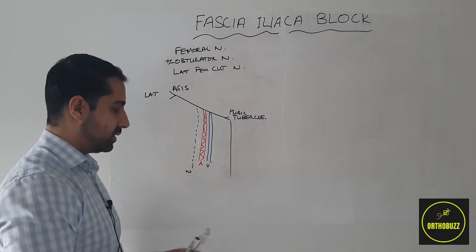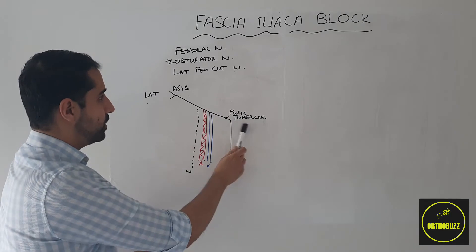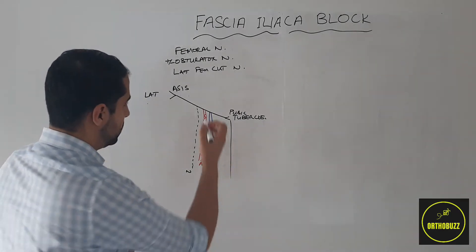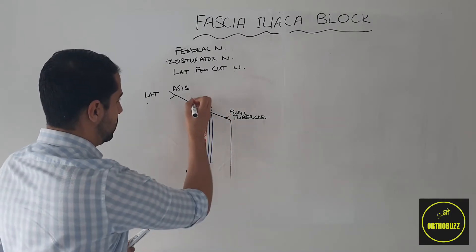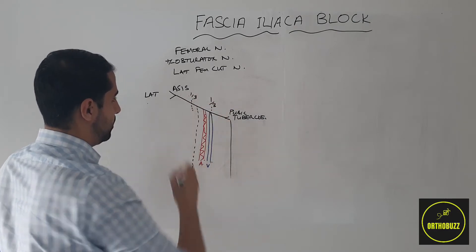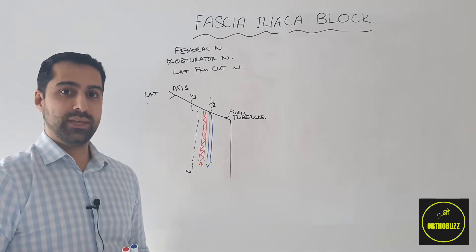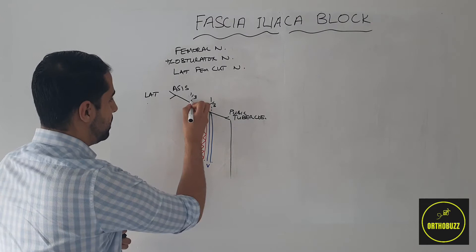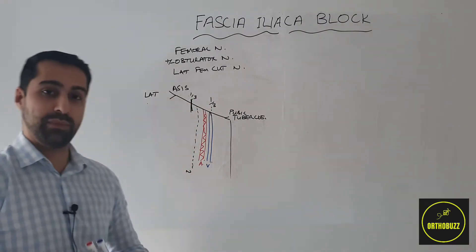Identifying our landmarks, we would first divide the line from the pubic tubercle to the anterior superior iliac spine into thirds. We can do this with our fingers — a third here and a third there. The point that we want to administer our injection is at the boundary between the lateral third and the medial two-thirds.